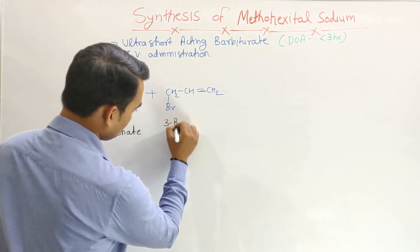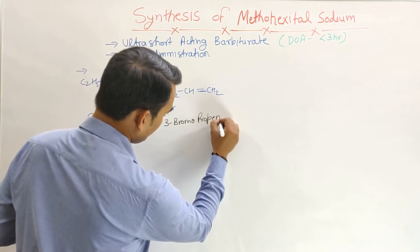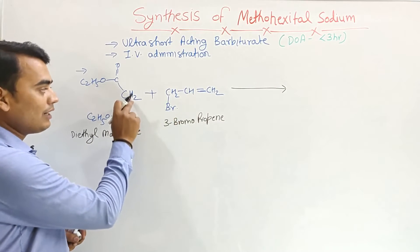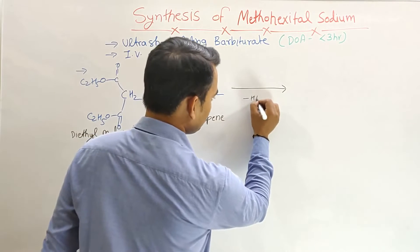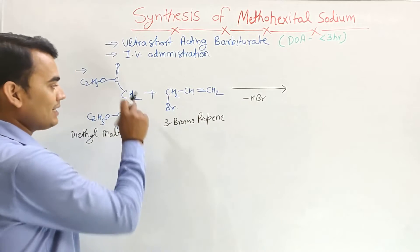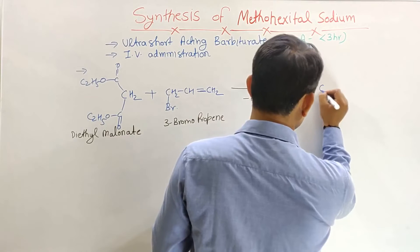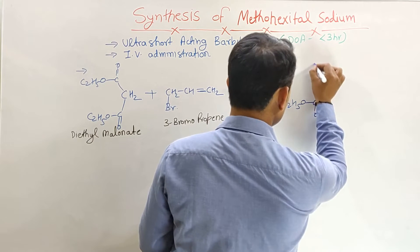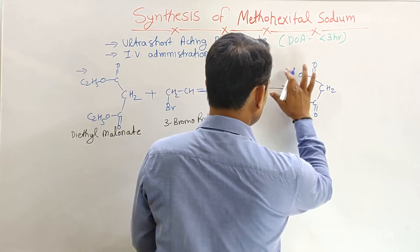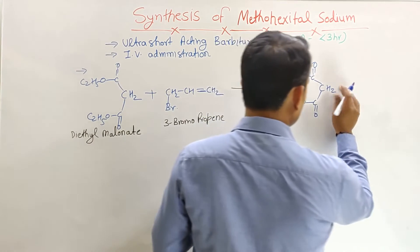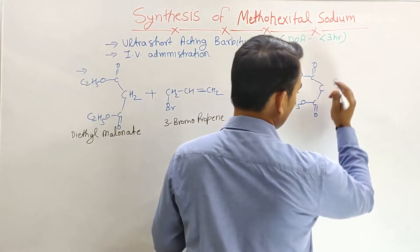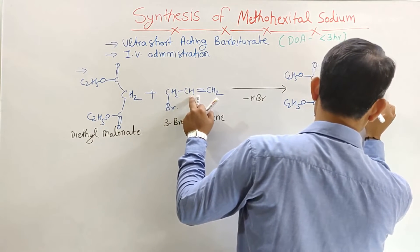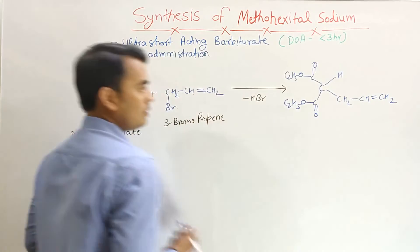When diethyl malonate reacts with 3-bromopropene, the bromine and the hydrogen on the central carbon of diethyl malonate are removed in the form of HBr, and the allyl (propene) group attaches to that carbon. This gives the first intermediate: diethyl malonate with one allyl group substituted on the central carbon, still retaining one hydrogen.